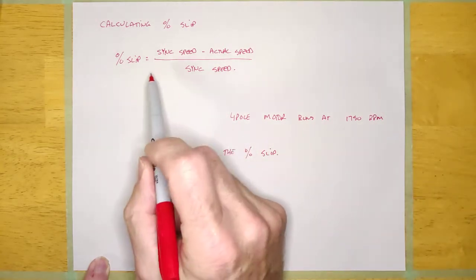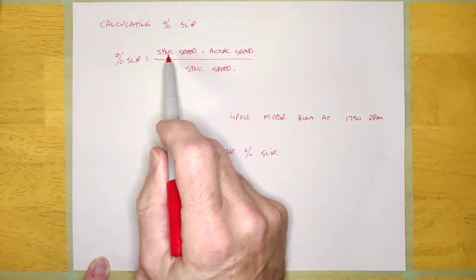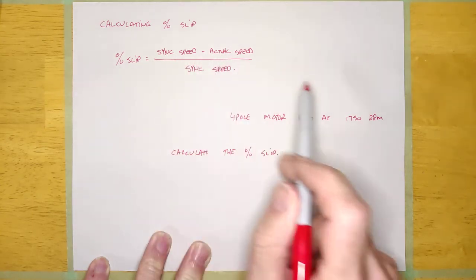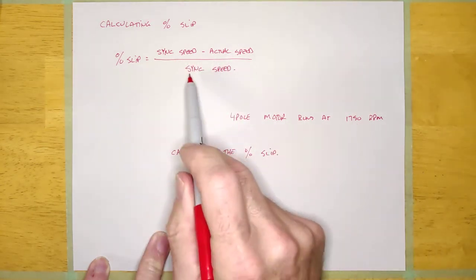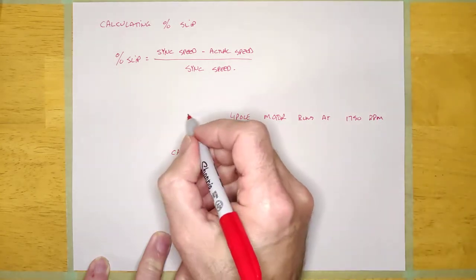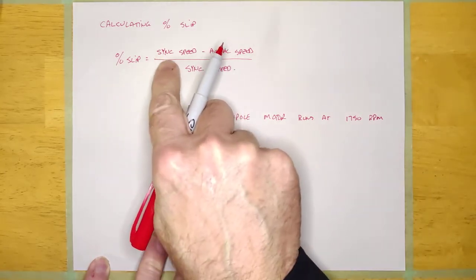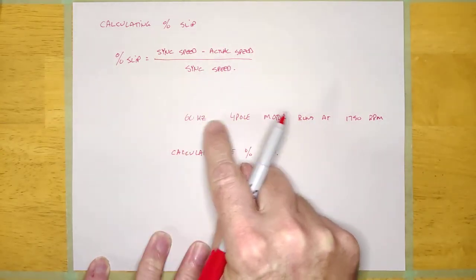Well, in order to calculate the percent slip, we need to know the sync speed and the actual speed, which is going to be the 1750, and then we're going to divide that by the sync speed. So then the question is, what's the sync speed of a four-pole motor at 60 hertz?